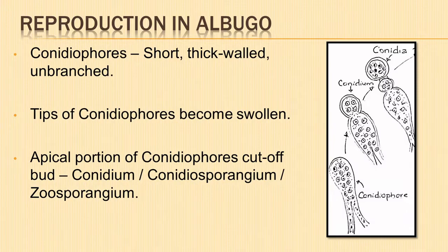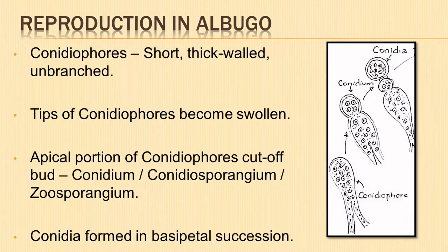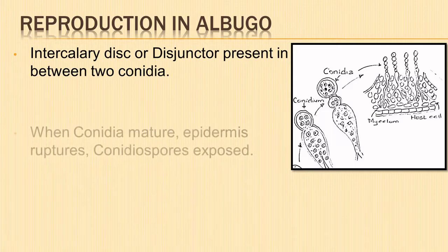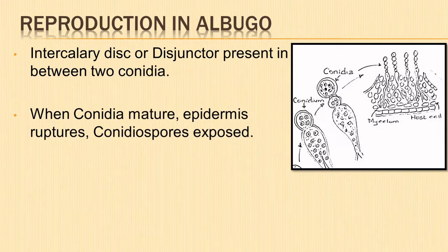Beneath the conidium, a chain of conidia is formed from one conidiophore in basipetal succession — that is, the youngest conidium is at the base and the oldest at the top. In between two conidia, a gelatinous disc-like structure called a disjunctor, or separation disc, or intercalary disc is present. When the conidia are mature, the epidermis ruptures and exposes the white powdery mass of dust-like conidiospores — hence the name white rust.